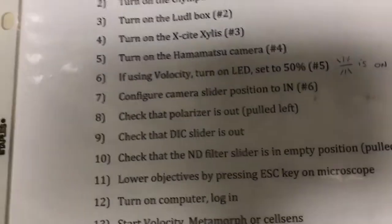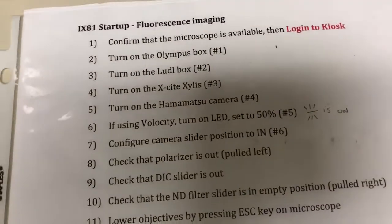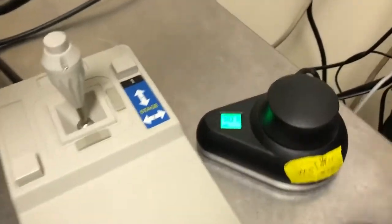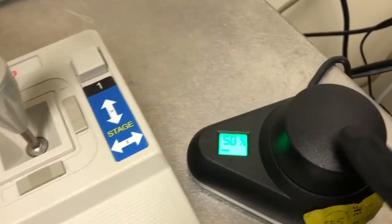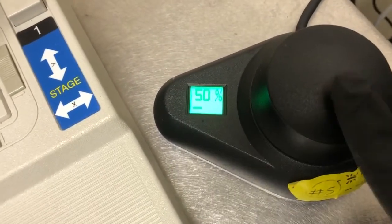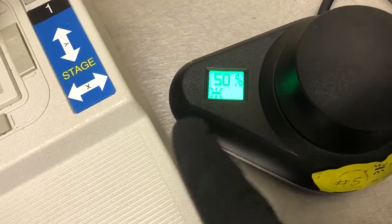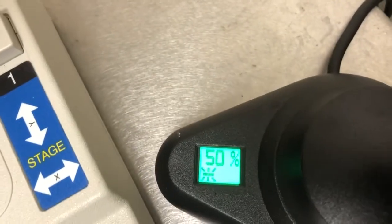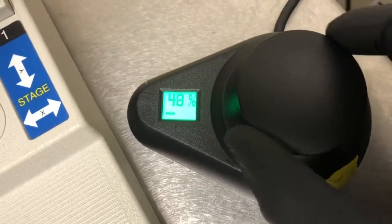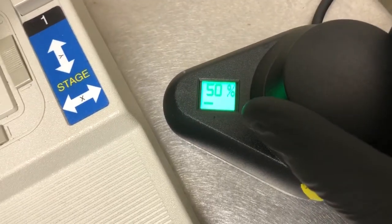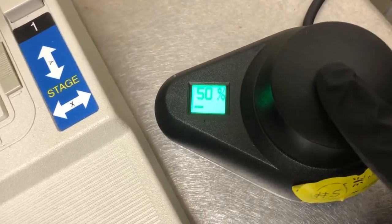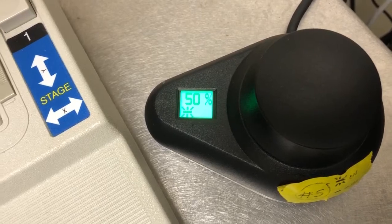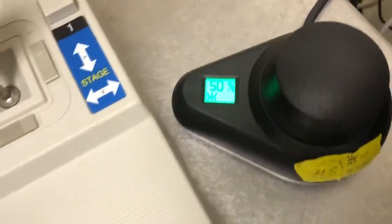If using velocity, turn on the LED and set it to 50% and this symbol means it's on. So this is how we turn on the light by pressing this button. You'll see it's at 50%. When I press this button, you'll see it'll have that symbol change to be on position. If we press it again, turn it off. And if we turn this knob, we can control the intensity of light that reaches the sample. So I'm going to turn this back on.